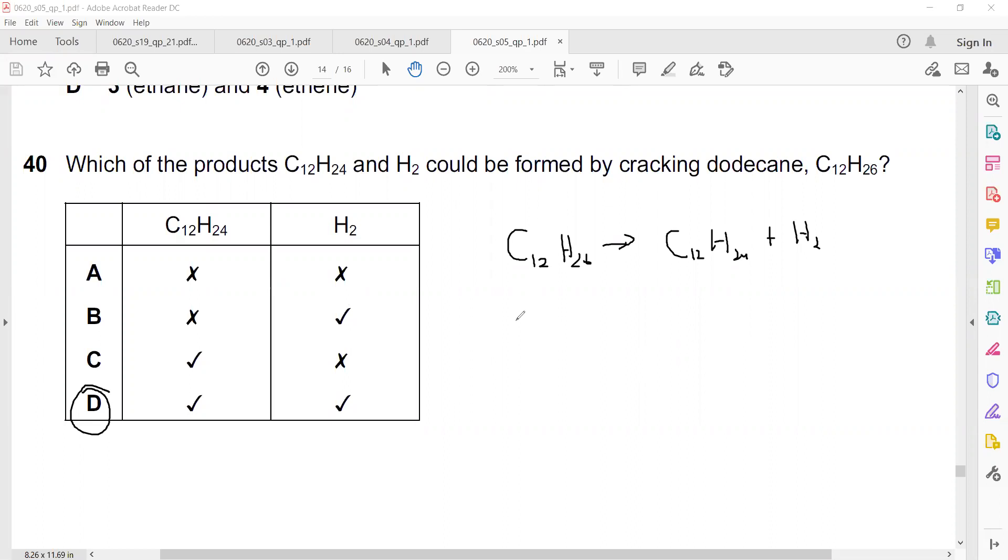So cracking of hydrocarbon produces alkene or hydrogen, or alkene and alkane. So this is alkene, and this alkene has a less number of hydrogens compared to the original alkane. That's why this is a possibility that this can also be produced. Is it clear?